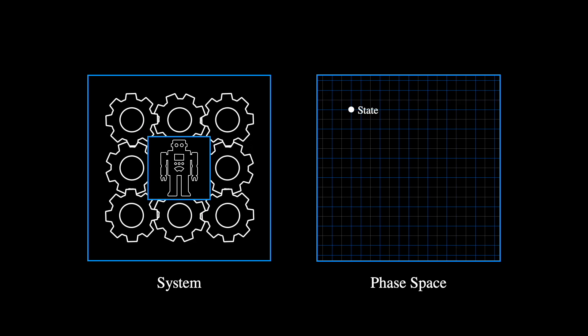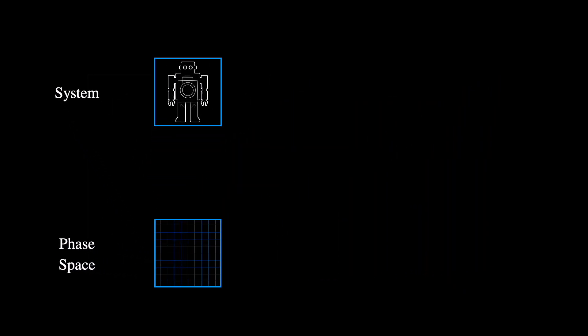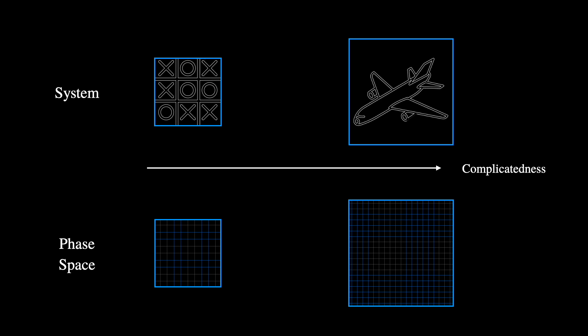The phase space of a complicated system is finite, bounded and static. The simpler the system, the smaller or lower dimensional its phase space. The more complicated the system, the larger or higher dimensional its phase space.